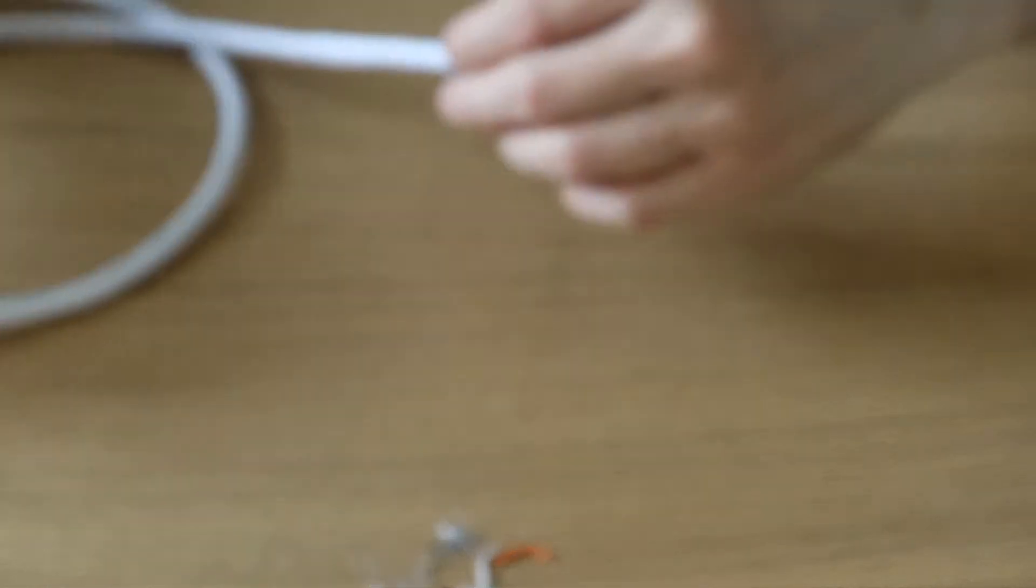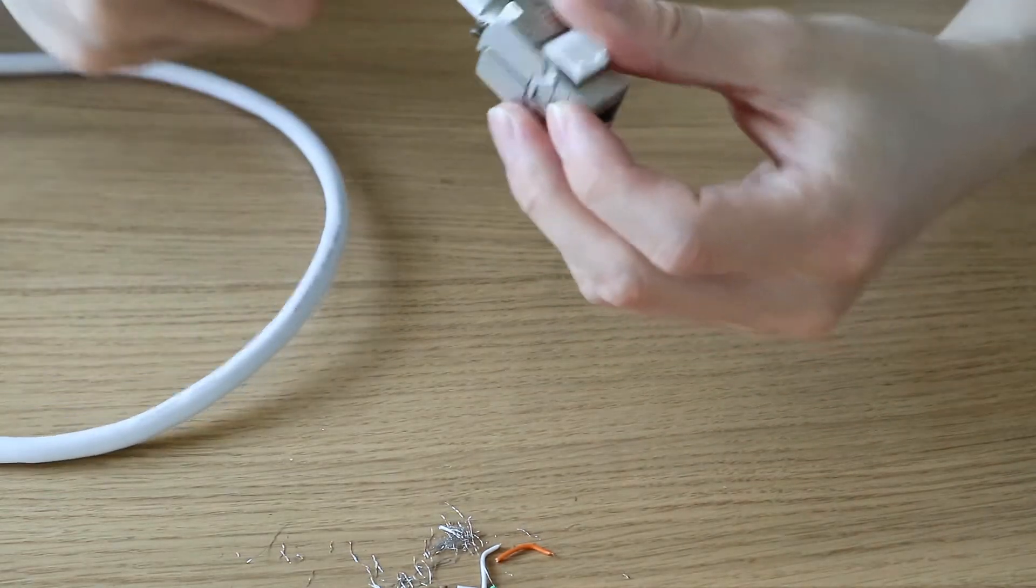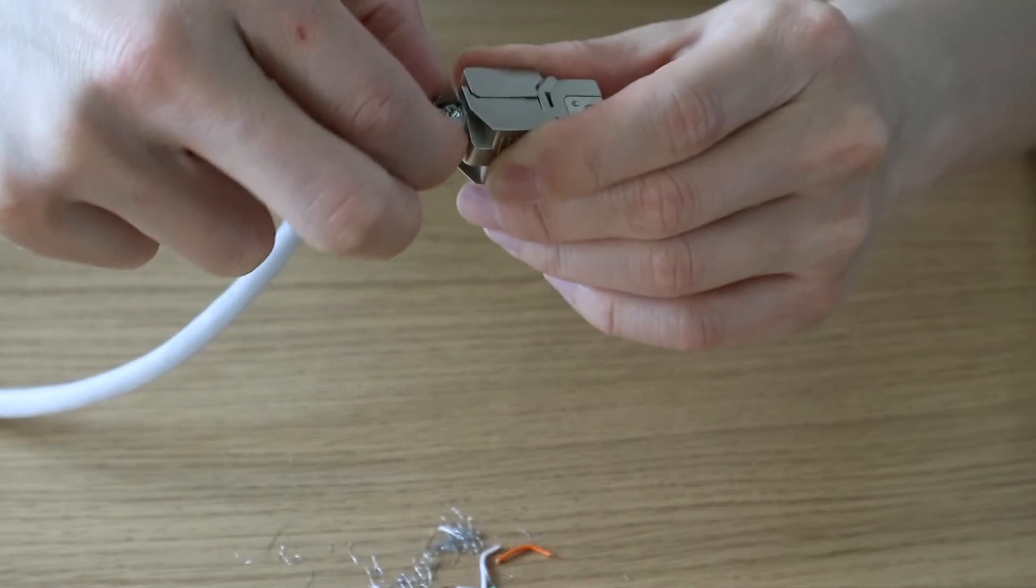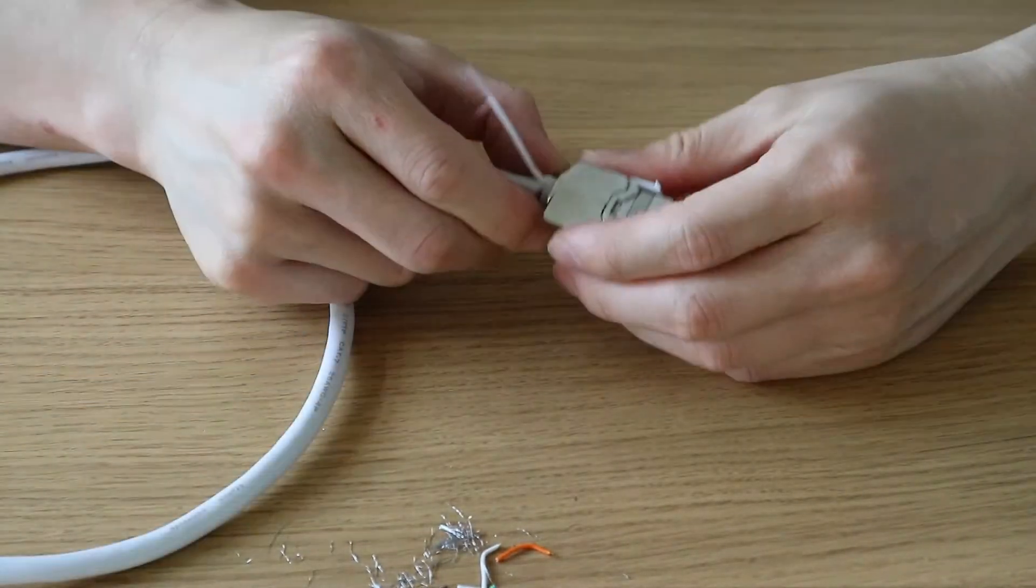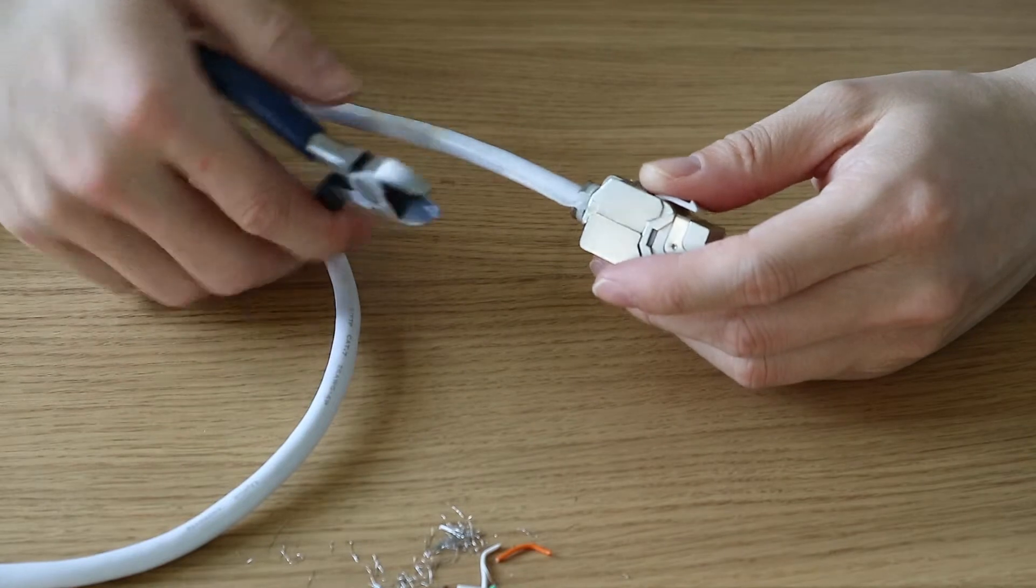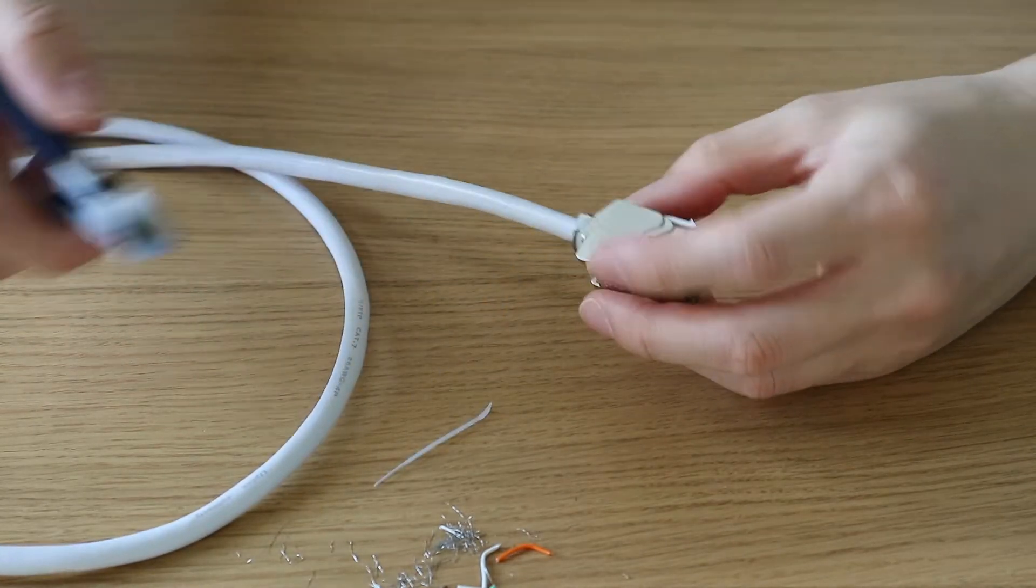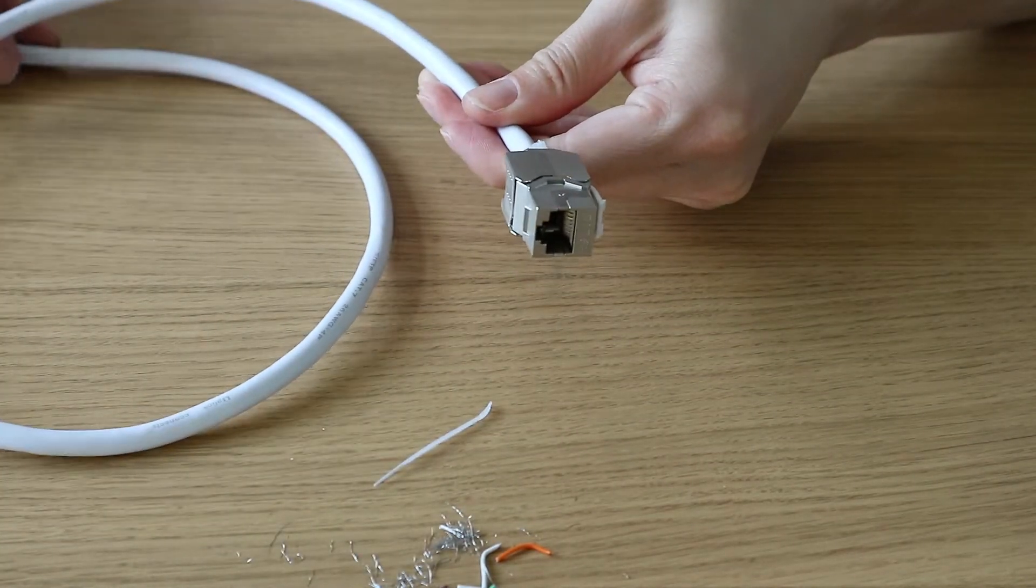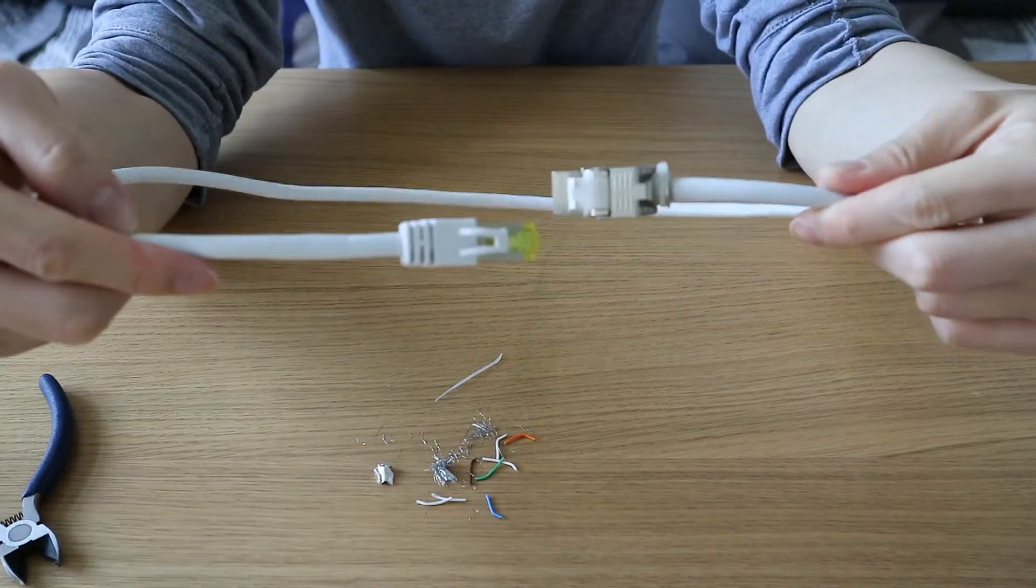Okay. And next I'm going to use a zip tie. The purpose of the zip tie is to make sure the end bit is holding the cable firmly. Okay, done. Right, here is the extension cable.